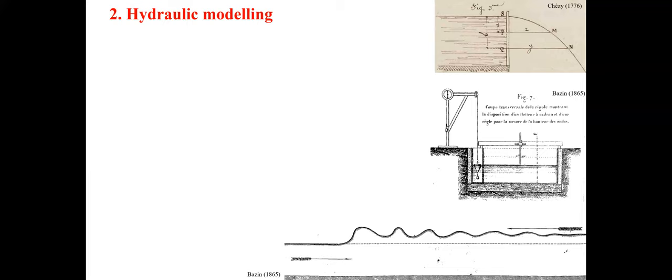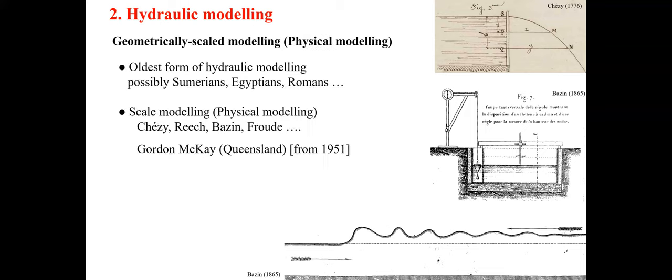Hydraulic modeling may take place in very different ways. A traditional approach has been physical modeling using geometrically scaled models. Physical modeling is one of the oldest forms of hydraulic modeling, used for several millennia, based typically upon fundamental principles developed during the 19th century — in particular by Chezy, Reynolds, Bazin, and Froude.